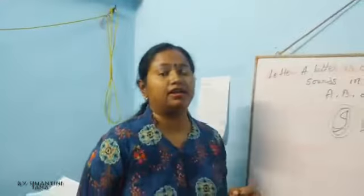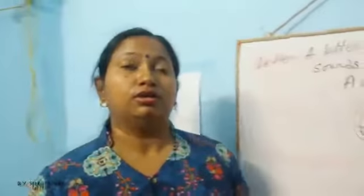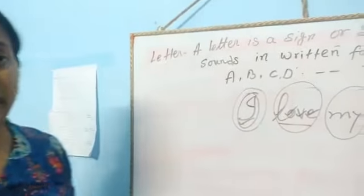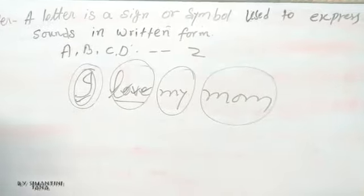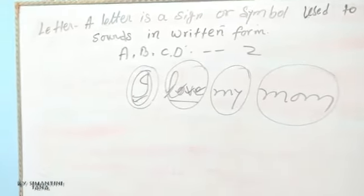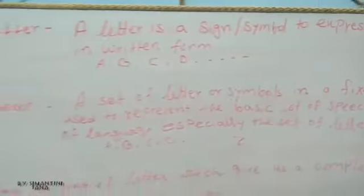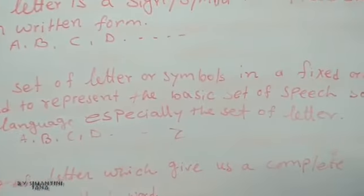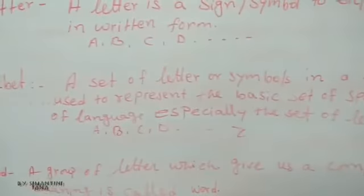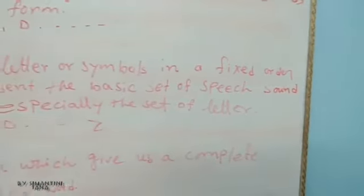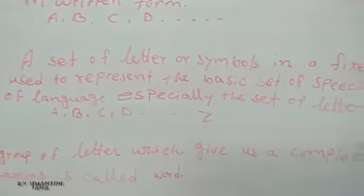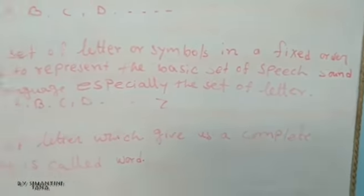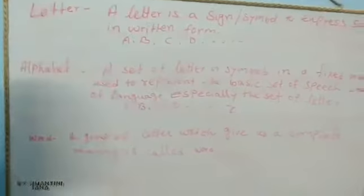So letters are very important. Now we will learn about the alphabet. What is an alphabet? An alphabet is a set of letters or symbols in a fixed order used to represent the basic set of speech sounds of a language — especially the set of letters A to Z.